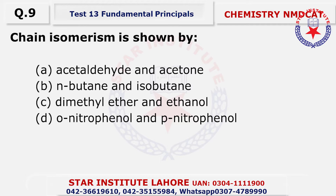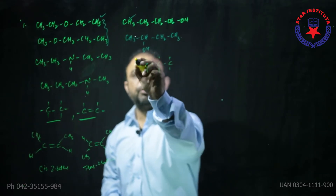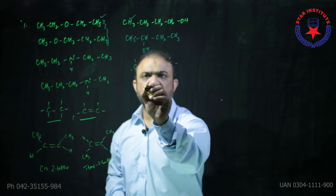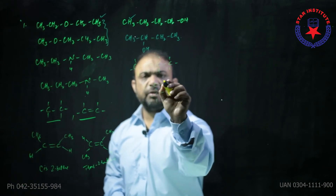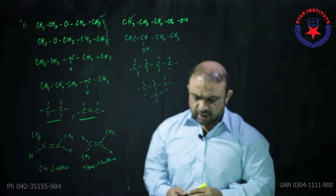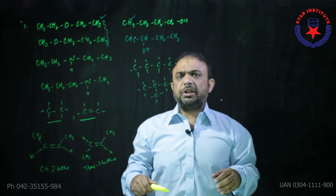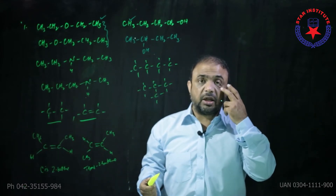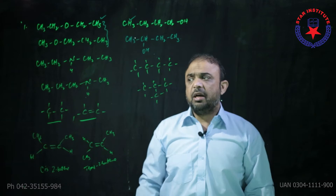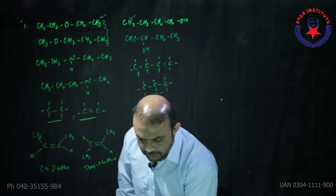Question number nine: Chain isomerism is shown by N-butane and iso-butane — they show chain isomerism with each other. We call this normal butane with a primary chain, and if iso-butane is formed, that is a secondary chain — so obviously they are showing chain isomerism. So the choice is B. Question number ten: Which of the following hydrocarbons does not have isomers? Chain isomerism is found in these hydrocarbons, and to start chain isomerism, the minimum carbon number should be 4 — so a 3-carbon compound will not show it.